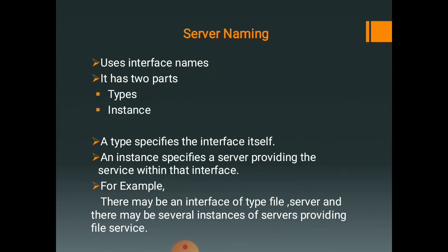The first process is server naming. The specification by a client of a server with which it wants to communicate is primarily a naming issue. Server naming uses interface names, and this interface name has two parts: type and instance. A type part specifies the interface itself and has a special field called a version number field. This version number field distinguishes between old and new versions of the interface.